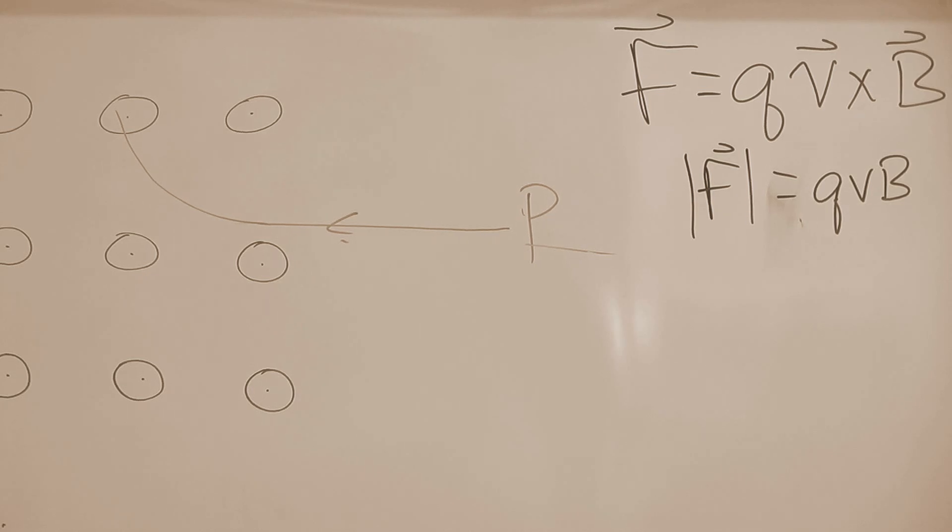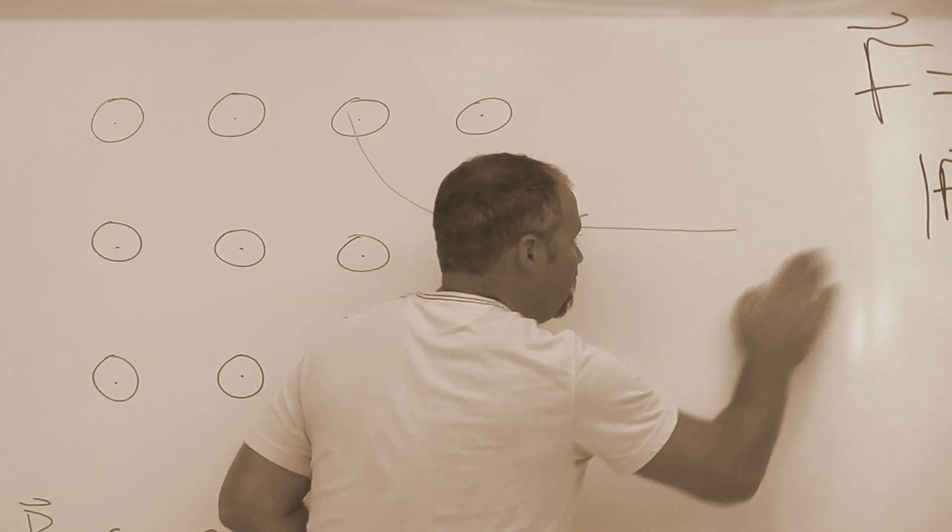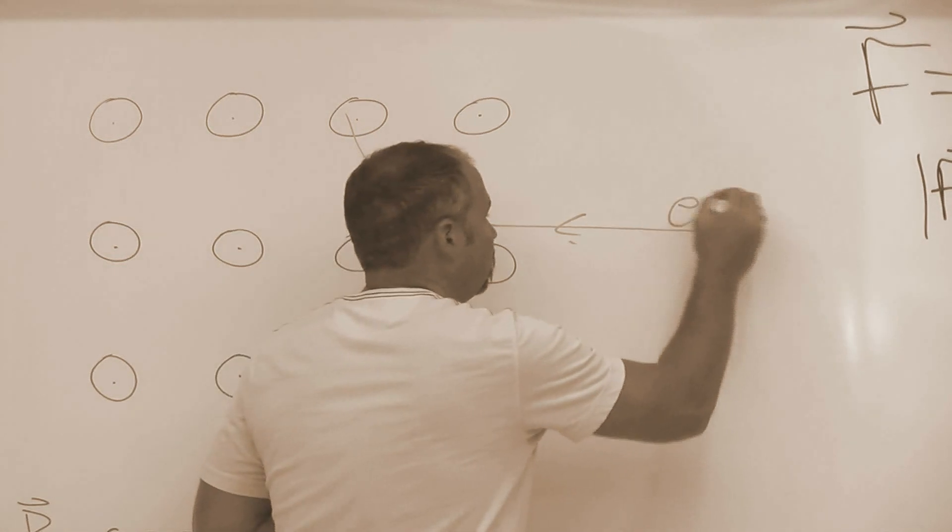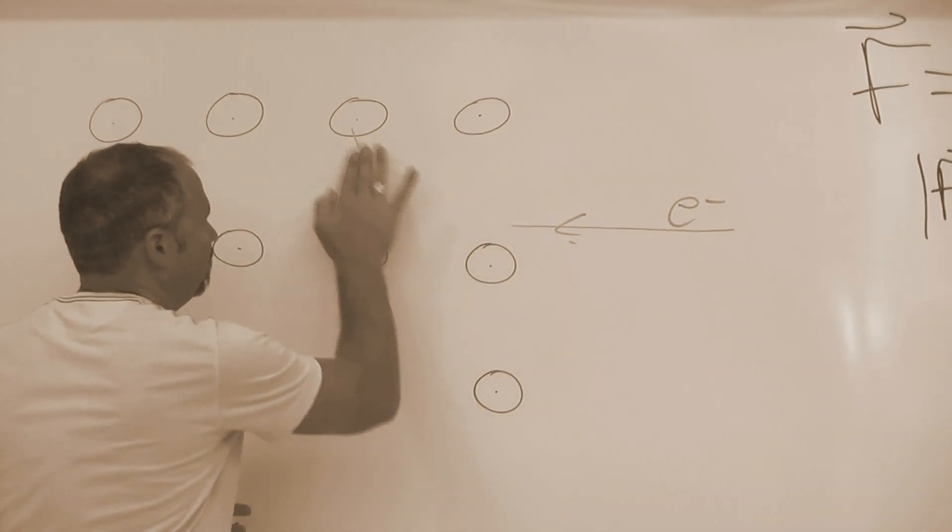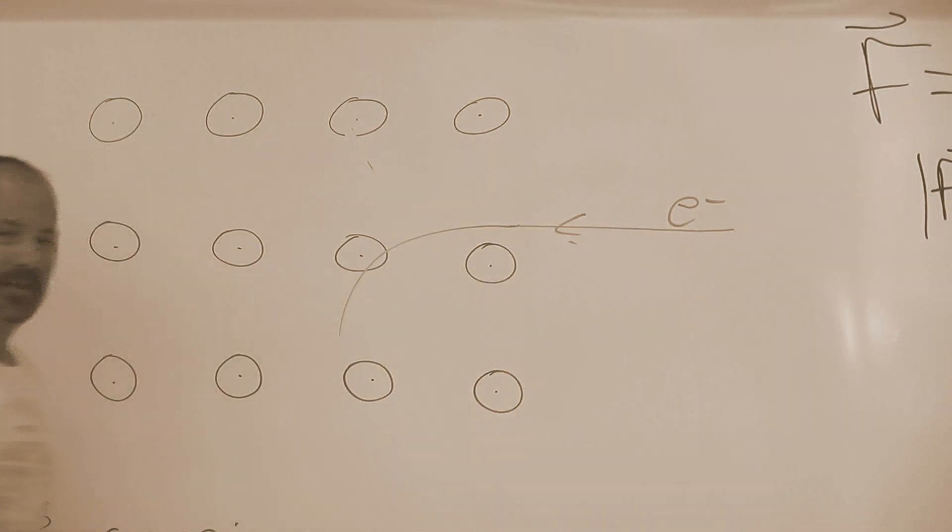Now, if instead of a proton, this was an electron, which is negatively charged, well, then it's just the opposite. It'll twist downward, like that.